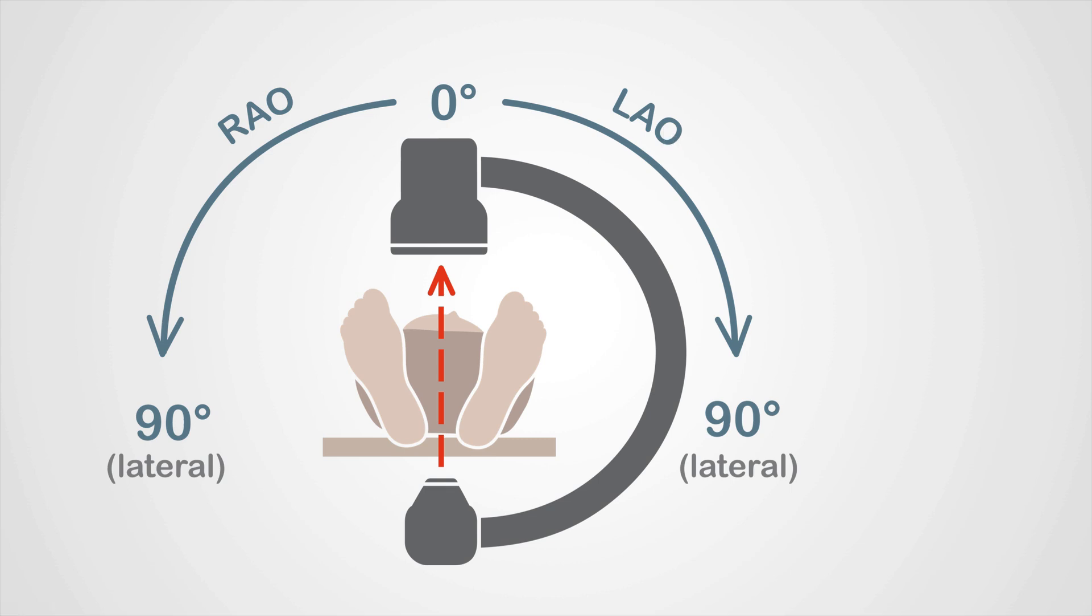As you can see from the diagram, the image intensifier can rotate right around to 90 degrees in either a right or a left direction. If it rotates to 90 degrees, it's known as a right lateral. If it rotates to 90 degrees, it's known as a left lateral.